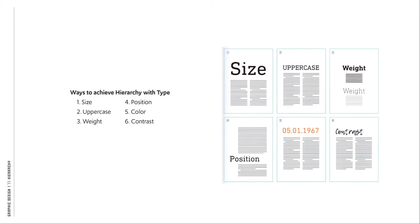The ways to achieve hierarchy with type: first, size — you can make things big. Second, uppercase — and the key thing to remember is that uppercase can be a lot smaller and still have the same impact as mixed case. Third, weight — you can make something bold or black, or alternatively light. A light typeface at a large size can have as much emphasis as a heavier weight at a smaller size. Fourth, position on the page — where does the headline hit? That breaks up the layout and makes it more interesting while providing hierarchy.